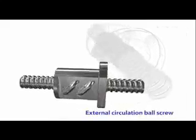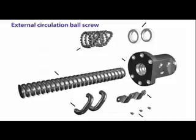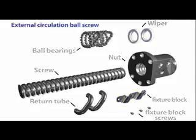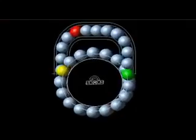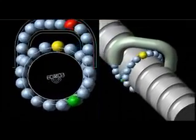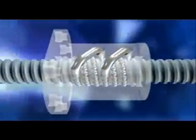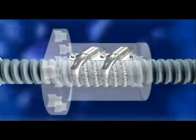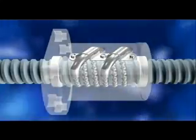External circulation ball screws consist of a screw, nuts, ball bearings, return tube, fixture block, and wipers. The bearings are located between the screw and the nut, and circulation is achieved using the return tube. The bearings return by way of the nut. Since the return tubes are located outside of the nut, this is known as an external circulation ball screw. The return tube ensures that the bearings travel along a sealed circuit, and the fixture block is used to anchor the elbows. The wipers are located at the outer ends of the nuts, serve to ensure a good seal, and prevent dust and cuttings from entering the bearing circuit.